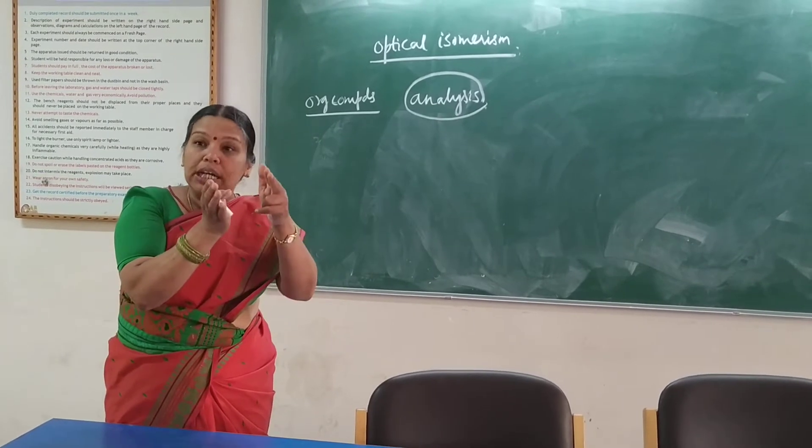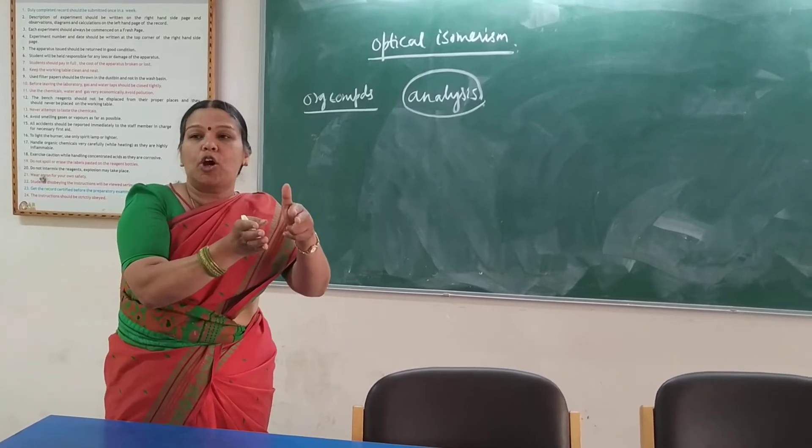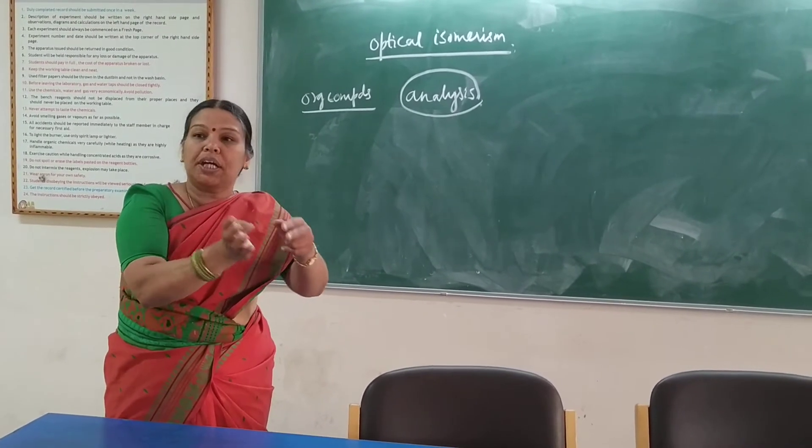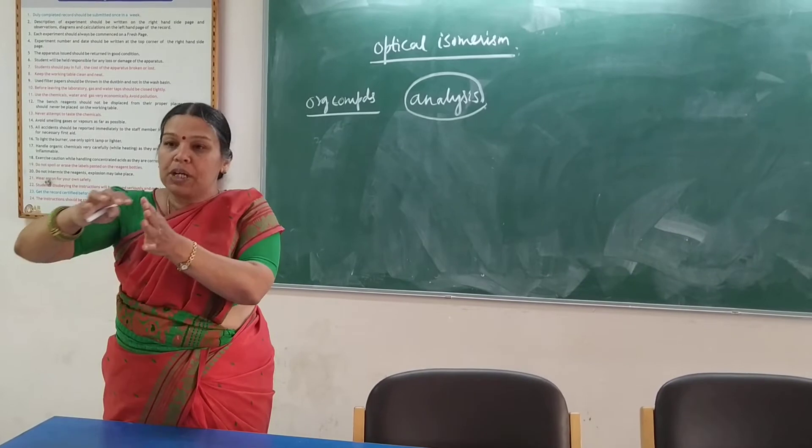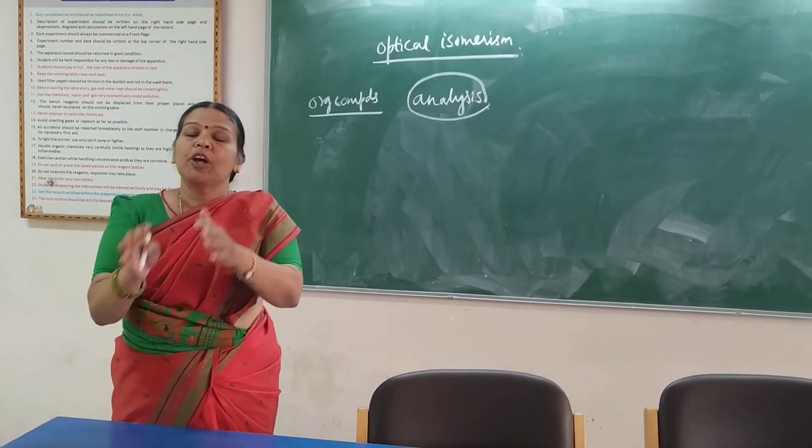So, we are going to classify organic compounds into two categories: one is Optically Active and one is Optically Inactive.